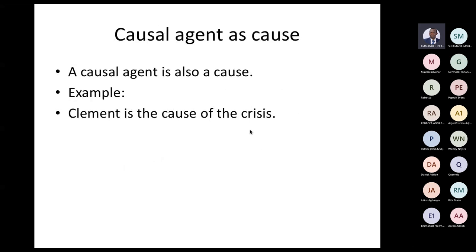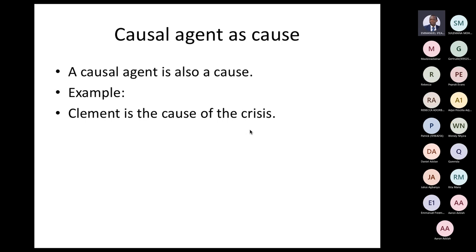A causal agent is also a type of cause. For example, Clement caused, or Clement is a cause of the crisis. Causal agents have to do with living things like human beings and other animals — they are causal agents.